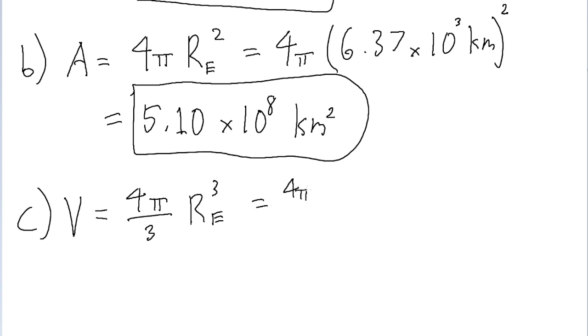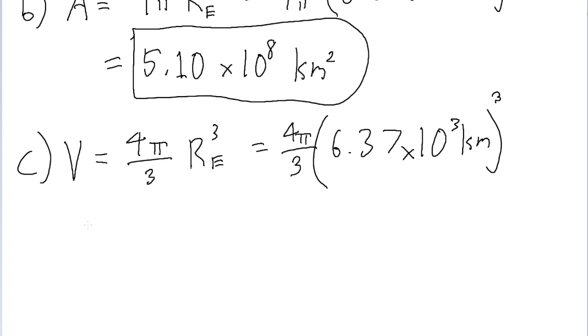So we're just going to do 4 pi over 3, multiplied by the cube of 6.37 times 10 to the power of 3 kilometers. And that whole radius is cubed. If we put this into a calculator, then we find a volume of about 1.08 times 10 to the power of 12 cubic meters.